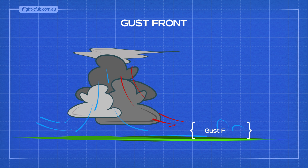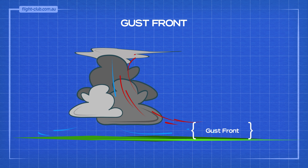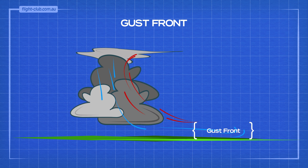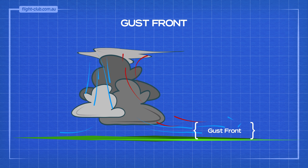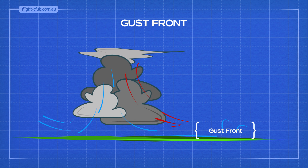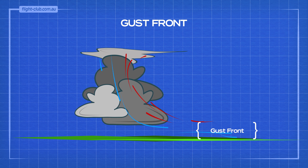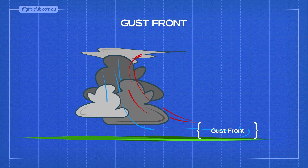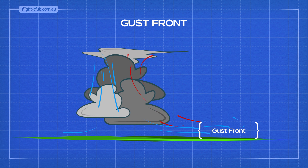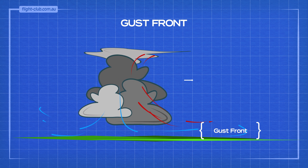A gust front is the leading edge of the cold air outflow after a downdraft reaches the ground and spreads out. The gust front advances far and fast ahead of the thunderstorm in the same direction of its movement.